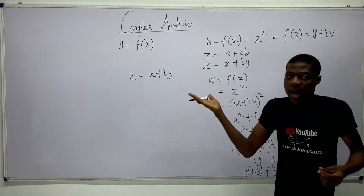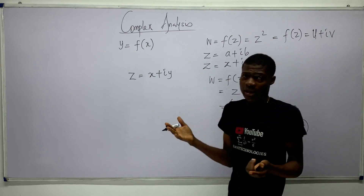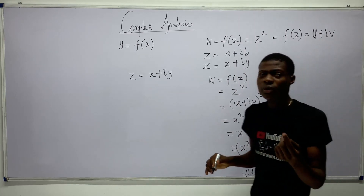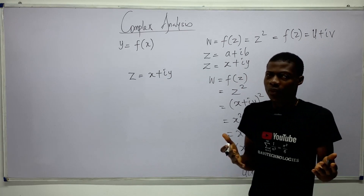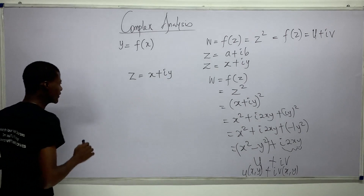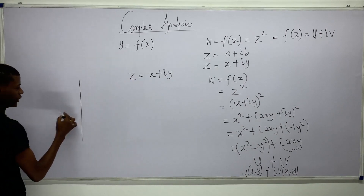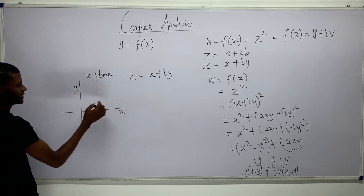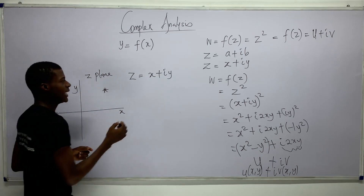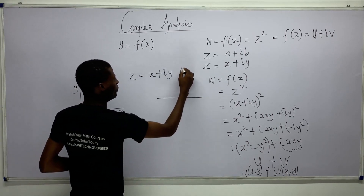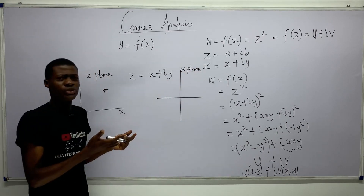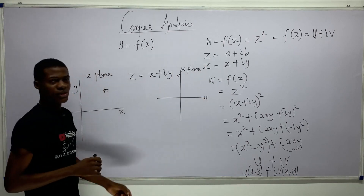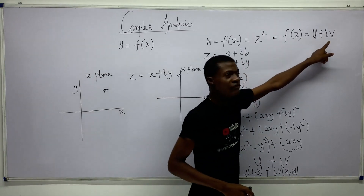So what do we do? We say z equals x plus iy, and when we transform it, f(z) equals u plus iv, where u and v are both defined by x and y. Since I have x and y I can graph the z side, and I can also graph the u and v side separately. So I'll have two graphs and then map one onto the other. Let me draw the z-plane with an x-axis and y-axis, and mark a point P.